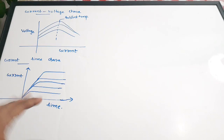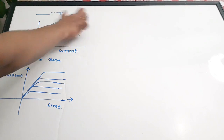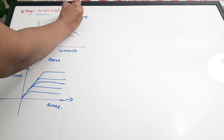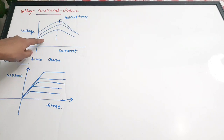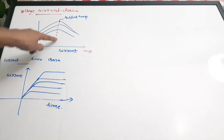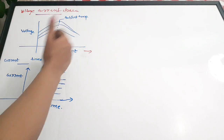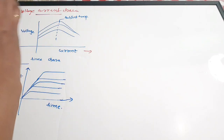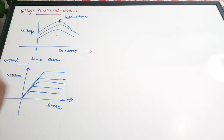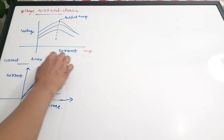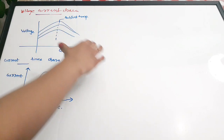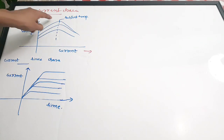Next we see the current-voltage and current-time characteristics. For the voltage-current characteristic: as current increases, voltage increases, but after reaching an ambient temperature, the voltage drops while current continues increasing. After a particular temperature, resistance drops, current increases, but voltage decreases.